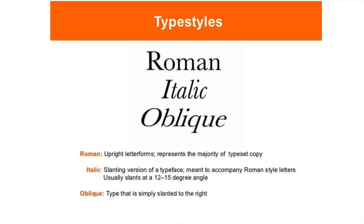Next are type styles — these are the styles we use in design typefaces. These include Roman, Italic, Oblique, Condensed, Bold, Light, Regular, and more. The upright letter font is known as Roman letters.